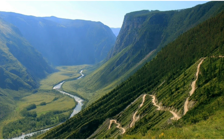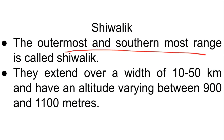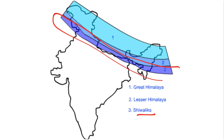The outermost and southernmost range is called the Shivaliks. They extend over a width of 10 to 50 kilometers and have an altitude varying between 900 and 1100 meters. These ranges are composed of unconsolidated sediments brought down by rivers like the Ganga and others descending from the main Himalayan ranges.